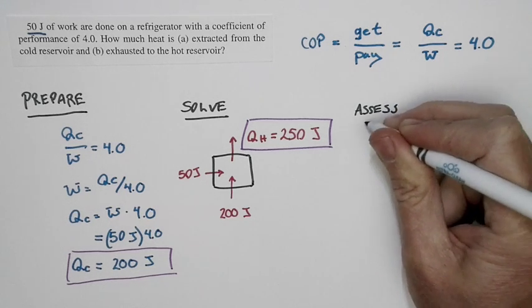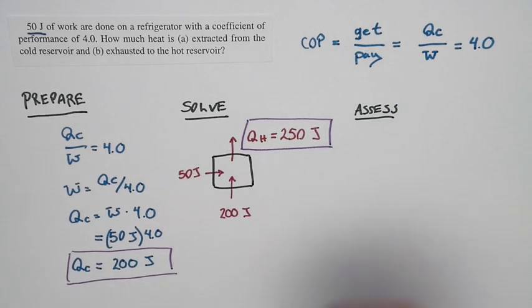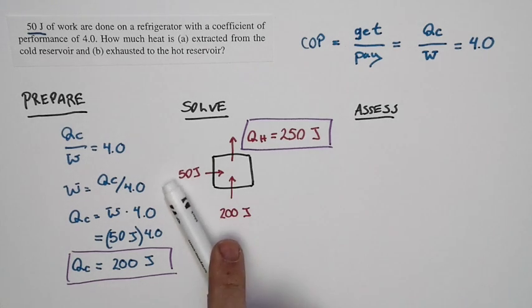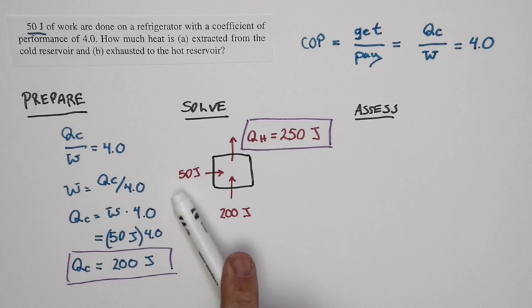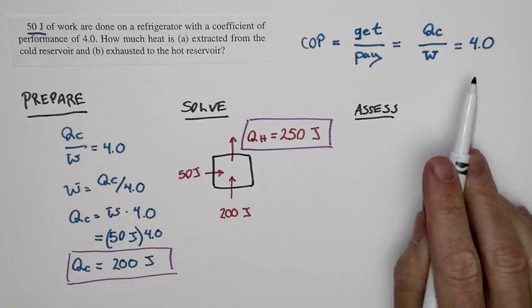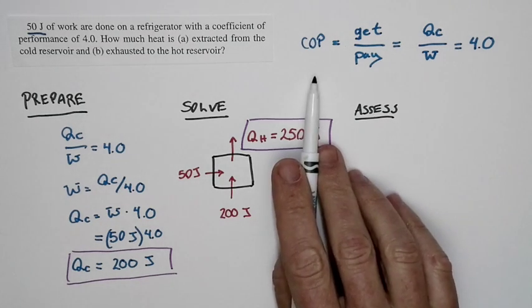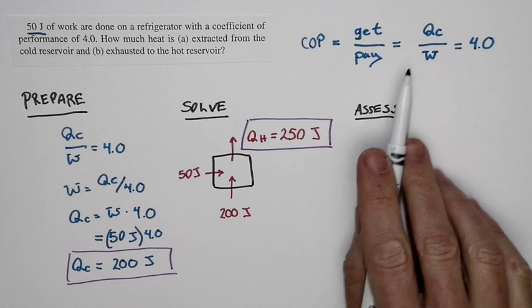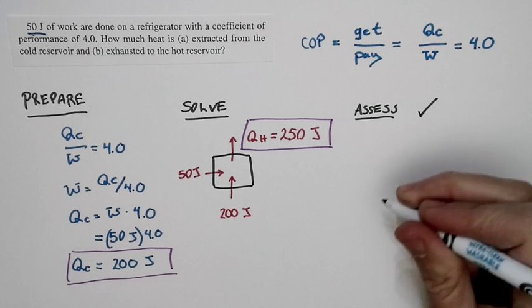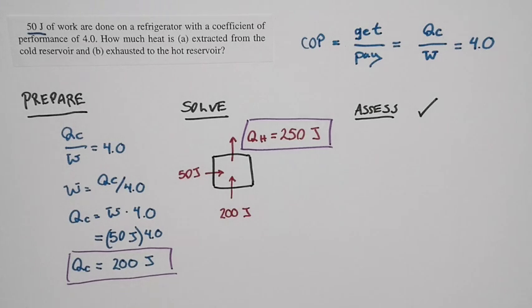Now, we'll assess and see if this makes sense. And the answer is, it does. The coefficient of performance is four. So, we expect to get more than we had to pay. And, in fact, four times as much. And the result that we have is consistent with the ideas of conservation of energy. And, in fact, refrigerators really work like this. Their efficiency is bigger than one. The amount of energy that you have to put in is less than the amount that you get to pump, which is kind of cool. So, this does, indeed, match with our expectations of how the world works.